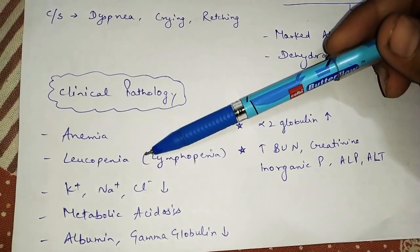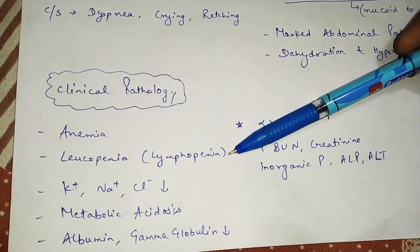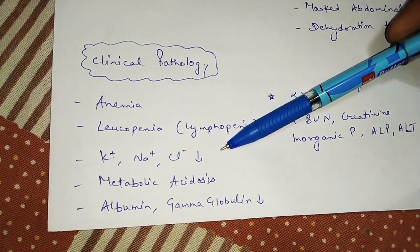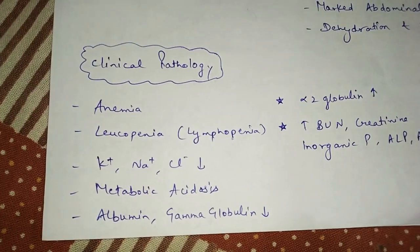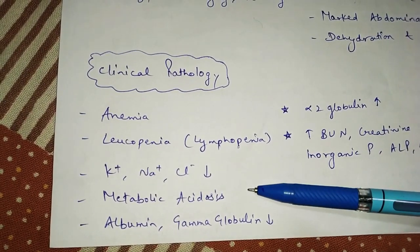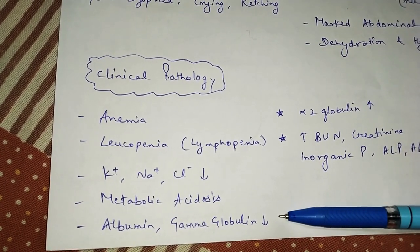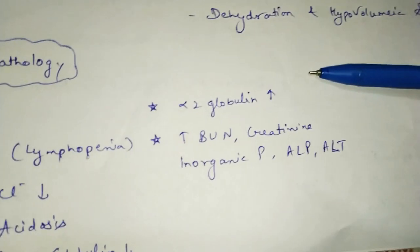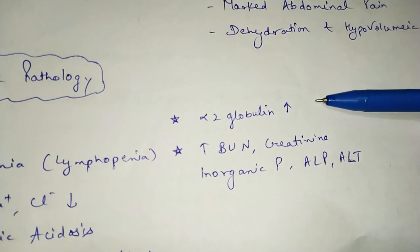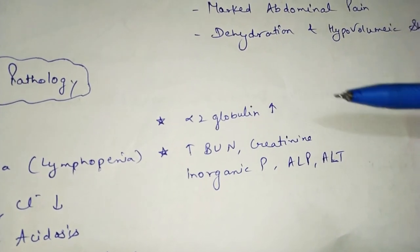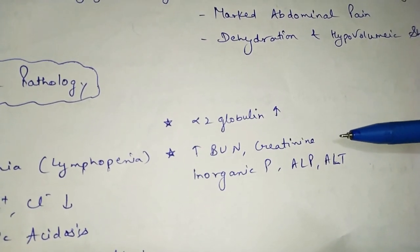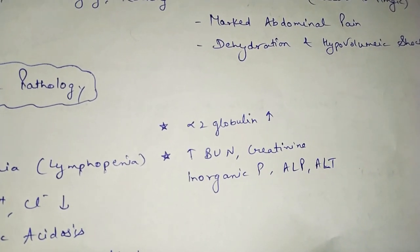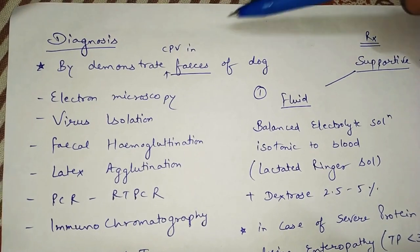Clinical pathology findings include anemia, leukopenia attributable to lymphopenia, hyponatremia, hypokalemia, and metabolic acidosis. Hypoalbuminemia and hypogammaglobulinemia occur, but there is hyper-alpha-2-globulinemia — alpha-2 globulin concentration increases. There is also an increase in BUN, creatinine, inorganic phosphate, alanine aminotransferase, and alkaline phosphatase.